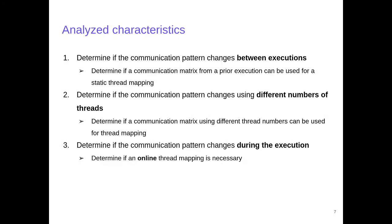Here is a summary of the characteristics of the sharing behavior that we analyzed in this paper. First, we performed two experiments to determine if the communication matrix of the application changes between different executions, and if the matrix changes when using different thread numbers. The main goal is to determine if the applications are suitable for static thread mapping, and if the communication matrix collected using a prior execution can be used for this purpose. Finally, the objective of the last experiment is to determine if the applications have dynamic sharing behavior during an execution. In that case, it would be necessary to perform an online thread mapping, in which threads are remapped several times during the execution.